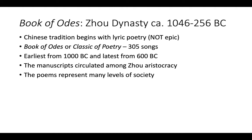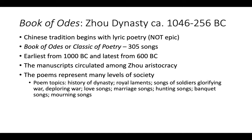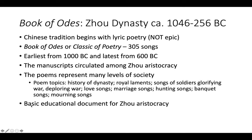The topics are very varied — there might be a poem about the history of the dynasty, a king lamenting something, soldiers glorifying war, soldiers deploring war, love songs, marriage songs, hunting songs, banquet songs, mourning songs — all sorts of stuff. It's meant to be representative of the entire region the Zhou dynasty ruled over. It was also treated as the basic educational document for the Zhou aristocracy, through which this group educated themselves and reminded themselves what they should be striving for.